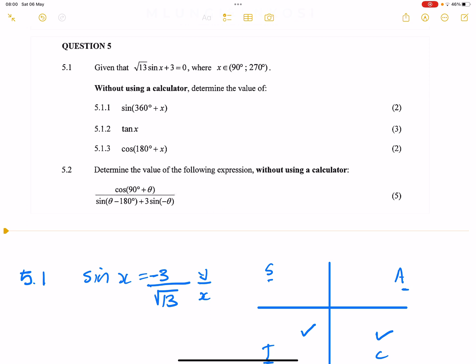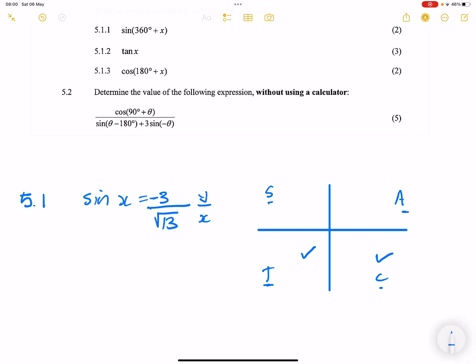But remember our restriction: they've given us x must be between 90° and 270°. So they are telling us that x must be an angle between 90° and 270°, so it must be in either the second or third quadrant. Notice where we have two ticks on the third quadrant, so it means our triangle will actually lie on the third quadrant. Let's draw it there quickly.